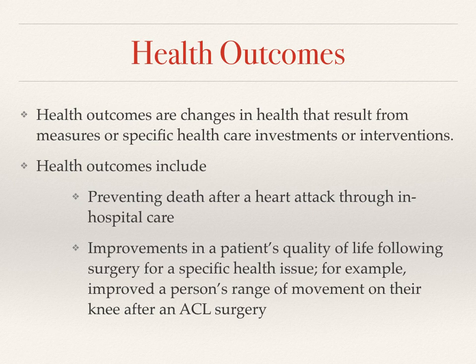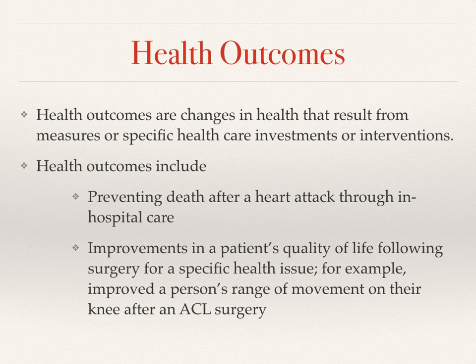For example, a health outcome can include how you prevent death after a heart attack through in-hospital care. Some interventions to prevent death from a heart attack include the medicine given in the hospital, but also outside the hospital — interventions can include a change in diet, more exercise, less sodium, and less caffeine. These are interventions that can lead to a change in that health outcome, meaning that you won't die.